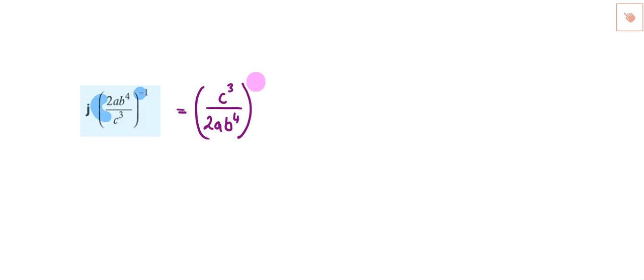We still have a positive 1, but hopefully you know that if you've got a power of 1, then that's just it. So we can actually then not worry about the brackets and just write c cubed over 2ab to the power of 4.